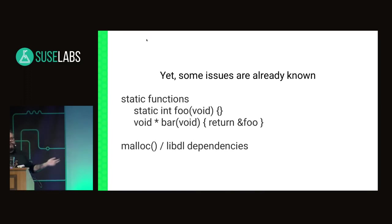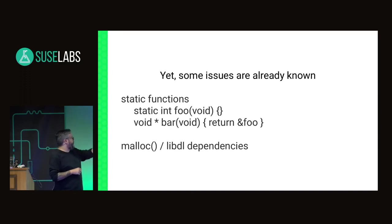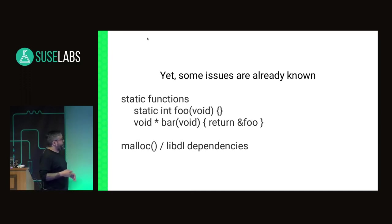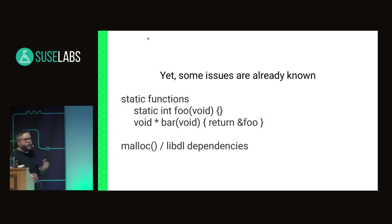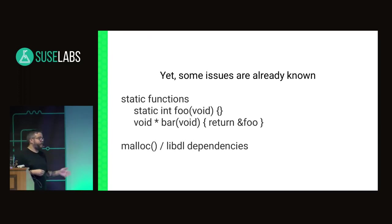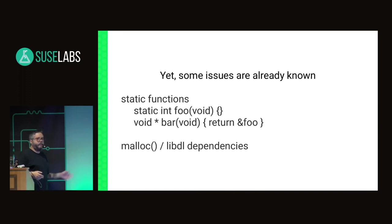There are some issues we still need to figure out. First are static functions — our model currently does not support patching static functions. A static function is not exported, so it's not called through dynamic symbol reference. But if another exported function leaks the address of a static function, foo can be reached without going through our gates, and we'd be unaware of it running. We are working on a solution and have some ideas. Another problem is that we currently use malloc and libdl in libpulp — if malloc is executing when we ptrace into the process and re-invoke malloc from our context, it could lead to a deadlock. This is also being addressed.